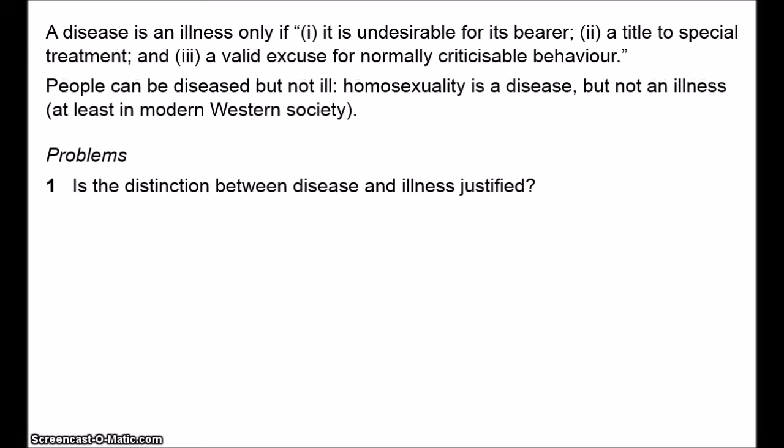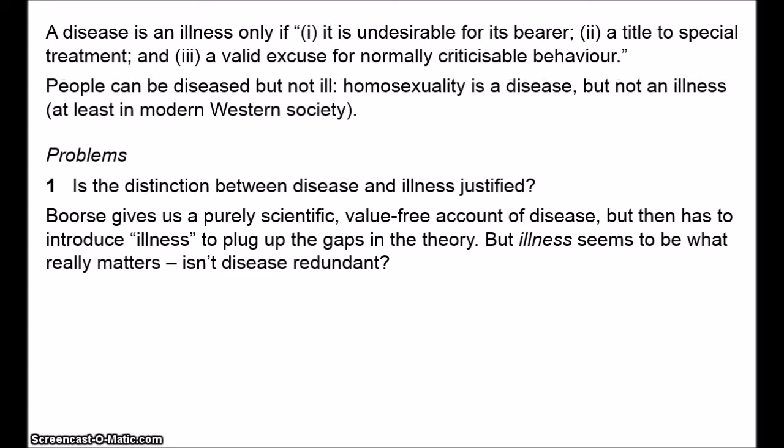Let's consider some difficulties for Boorse. First, why draw this distinction between disease and illness? Is there maybe something dodgy going on here? Boorse says he wants to give us a value-free empirical theory of disease, and he does. But then he has to introduce the concept of illness to plug up the gaps left in the theory. And once Boorse introduces this concept of illness, doesn't the concept of disease become redundant? On Boorse's view, illness is doing all the practical work — it's what actually matters, what we want to avoid, and what doctors, psychiatrists, and governments are going to spend money on.